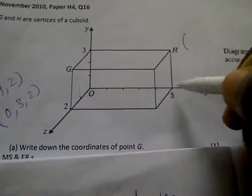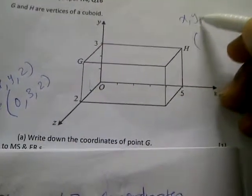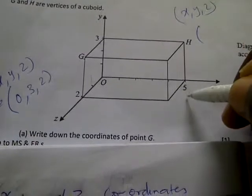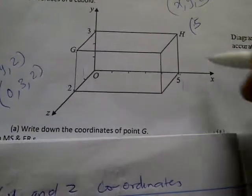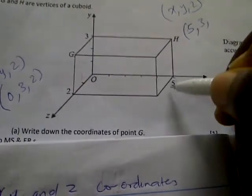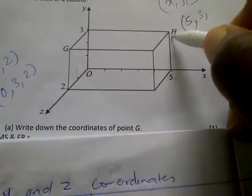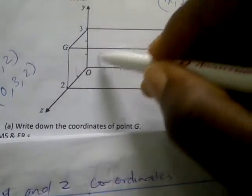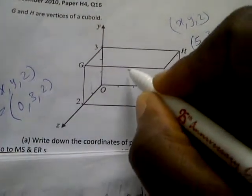Now for point H: we write X, Y, Z. On the X axis, H is at five, so X equals five. Y is the same three. For Z, this point doesn't exist on the Z axis, so we put zero for Z. Therefore H has coordinates (5, 3, 0).